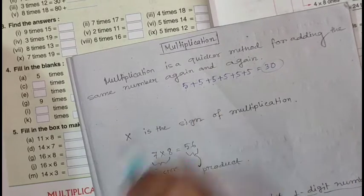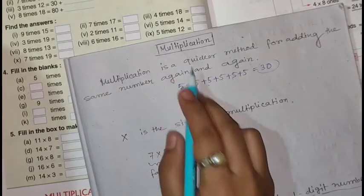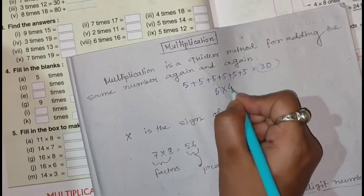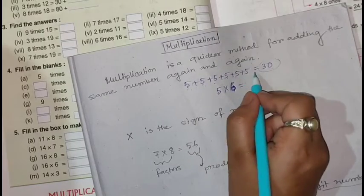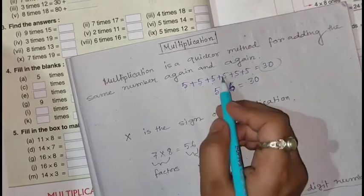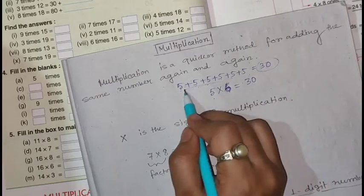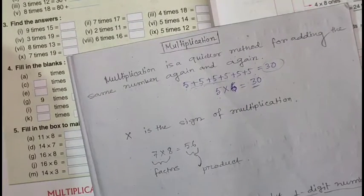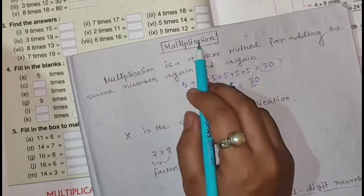We can do this addition in a shorter, quicker way through multiplication. Here 5 is added 6 times, so if you multiply 5 by 6 you get 30. We can write this as repeated addition: 5 multiplied by 6 gives 30. So we can do any addition in a shorter way through multiplication.